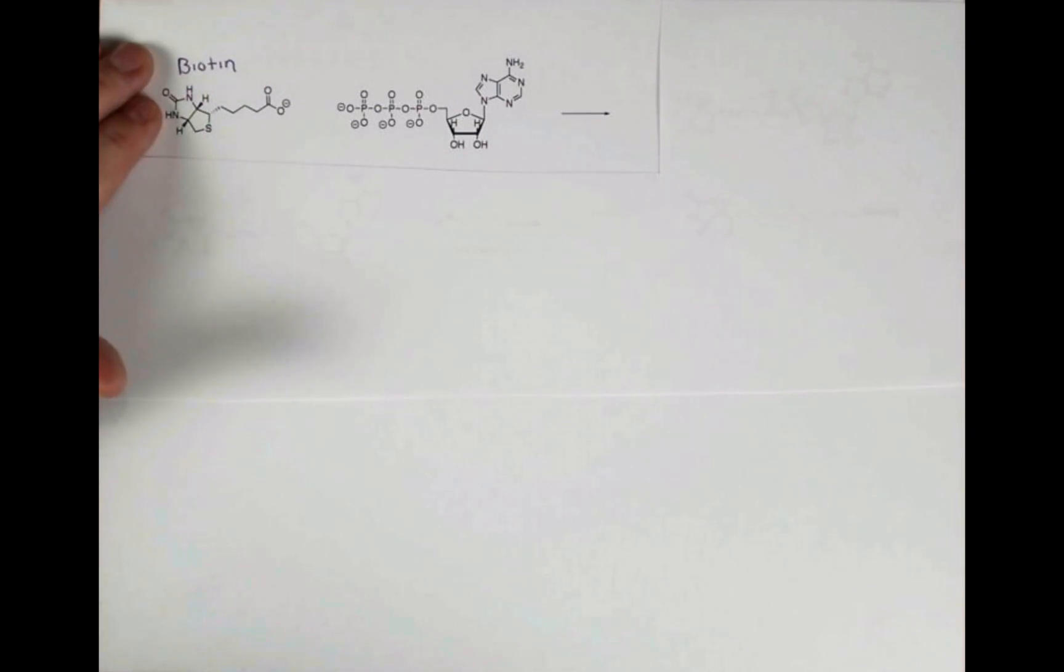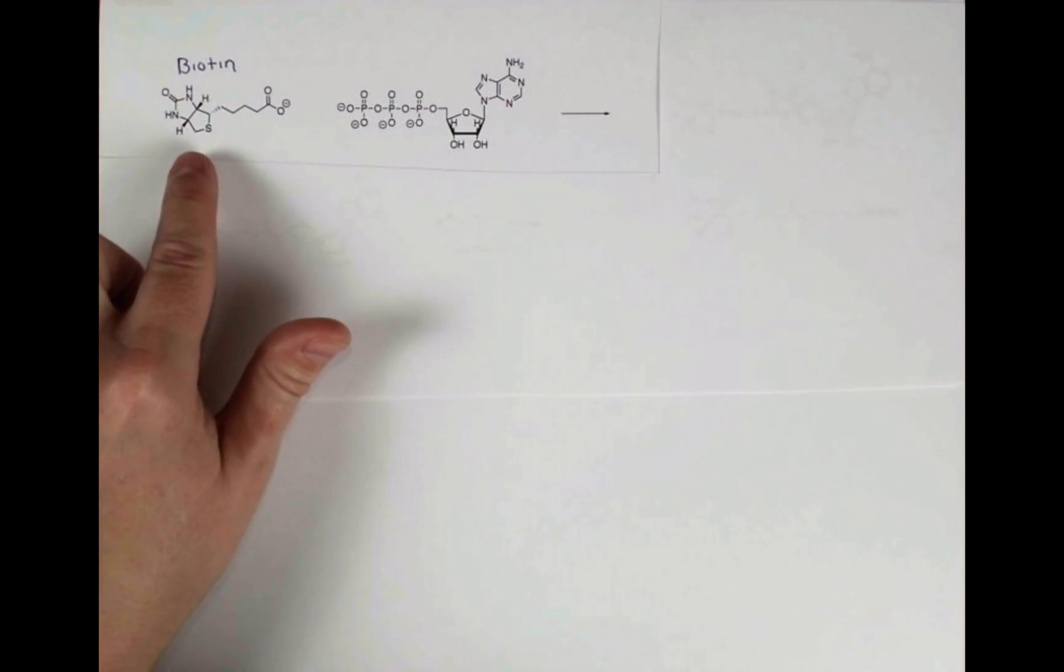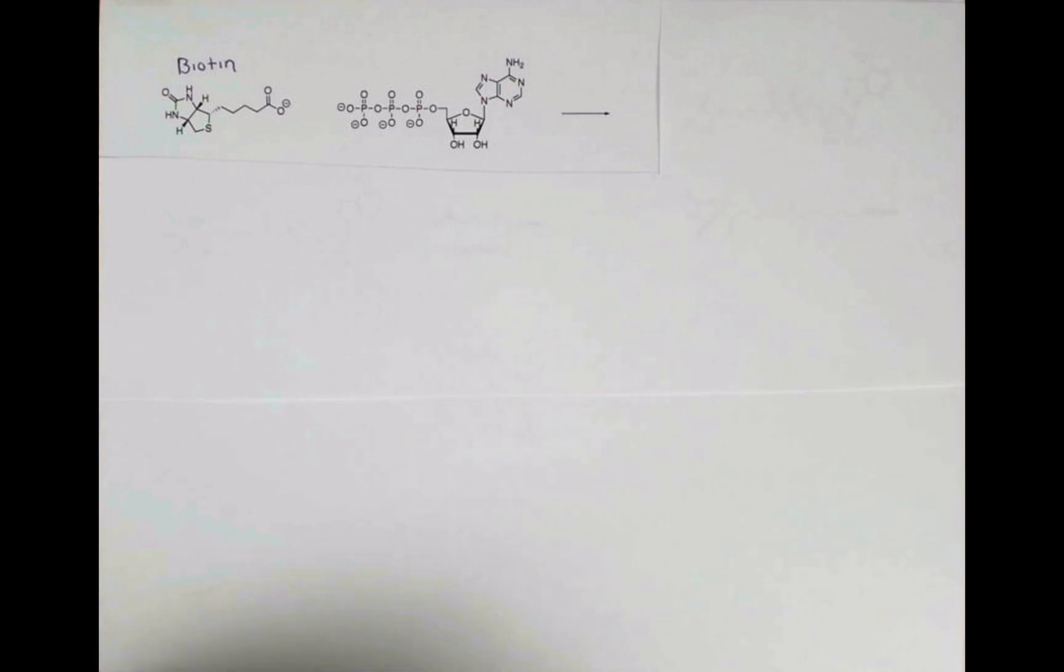In this lesson, we're going to talk about biotin. The structure is shown right here. Biotin is also called vitamin B7. It acts as a coenzyme in the body, which means biotin can bind to an enzyme and enable that enzyme to do chemistry that it wouldn't be able to do on its own. This coenzyme enables an enzyme to add CO2 to a molecule. It enables carboxylation.